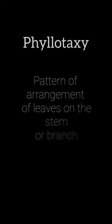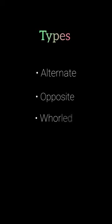Phyllotaxy is basically a pattern of arrangement of leaves on the stem or branch. It is usually of three types: Alternate, Opposite, and Whorled.